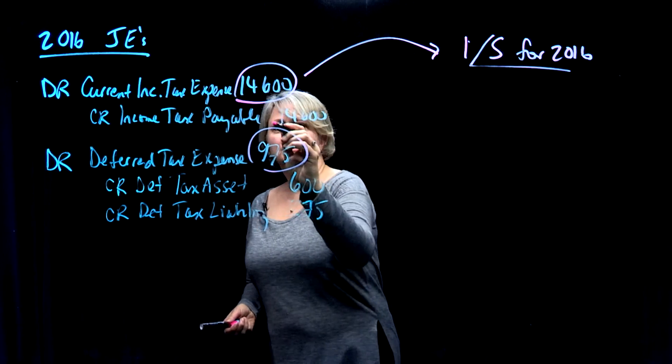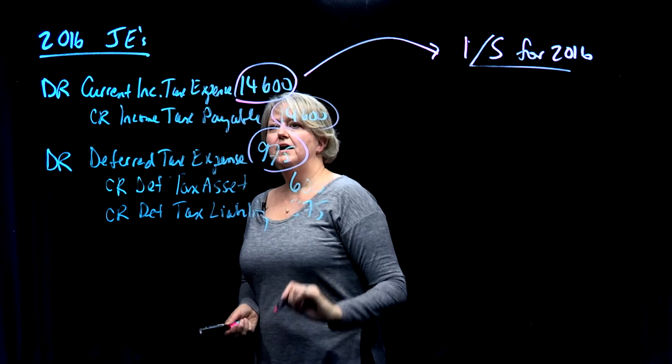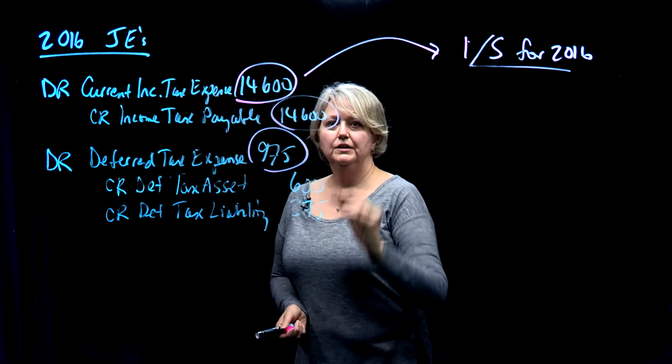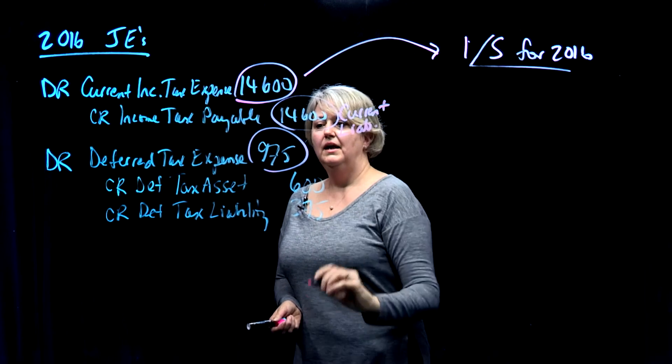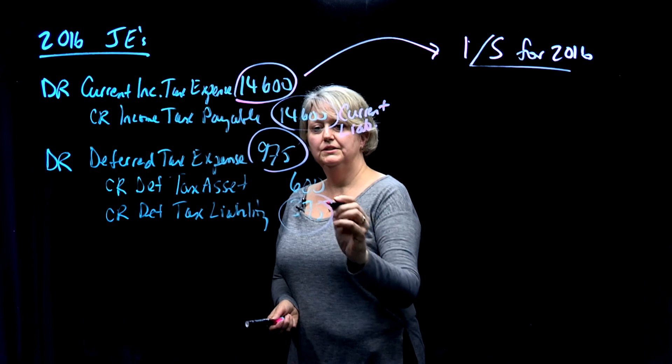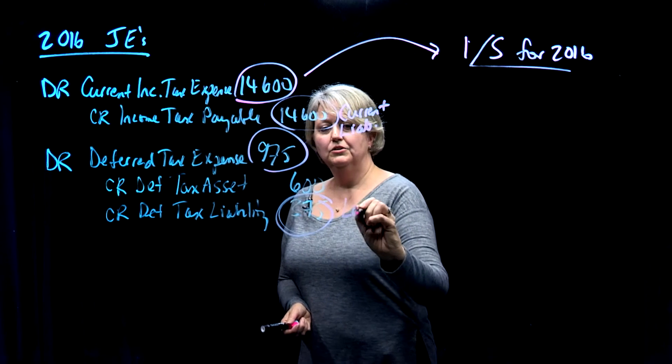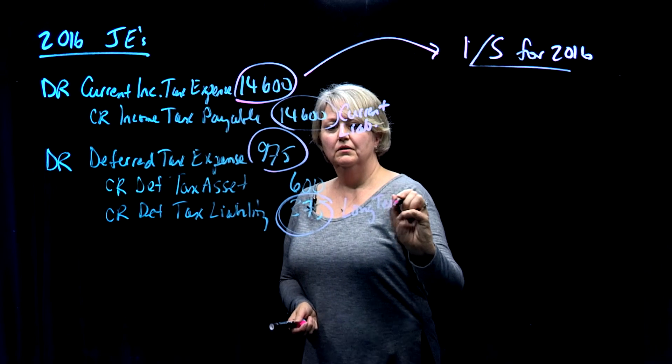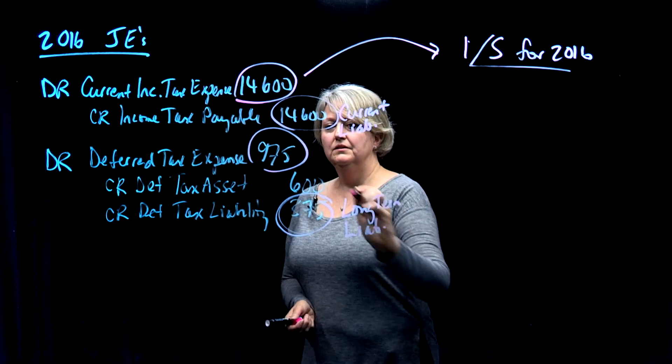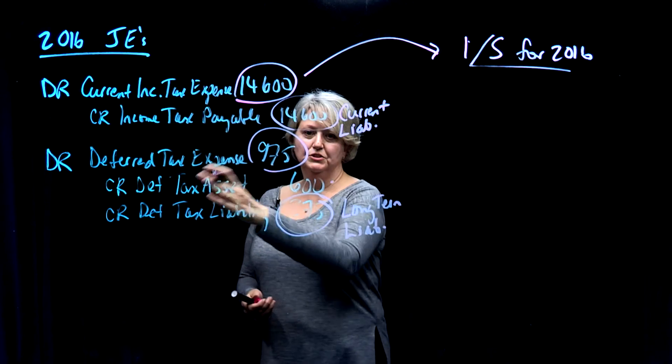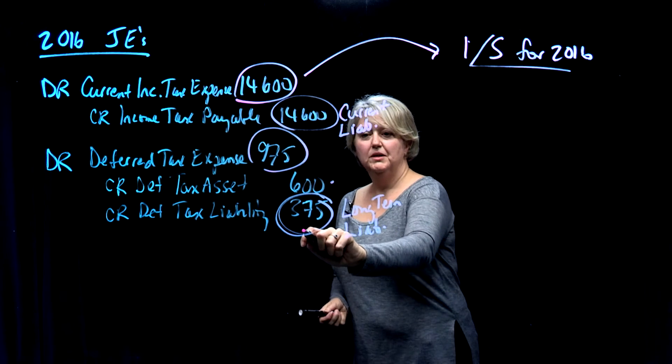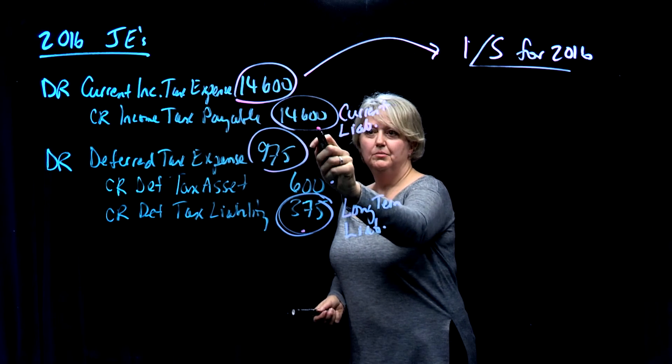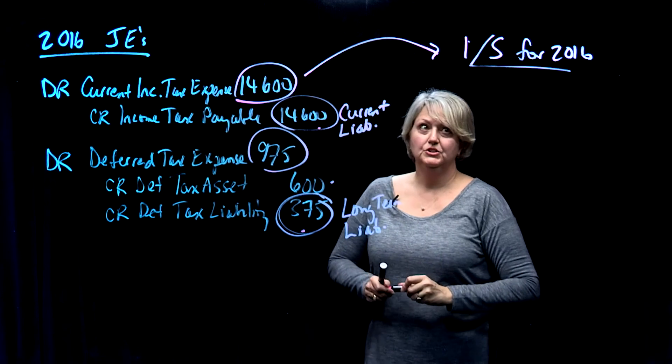For the balance sheet, we've got this value that's gone into the current liabilities, and this value sitting in the long-term liabilities. This value has been made to go to zero because it was an asset of $600 and we've gotten rid of it. So we've got a long-term liability of $375 and a current liability of $14,600 entered on our balance sheet.